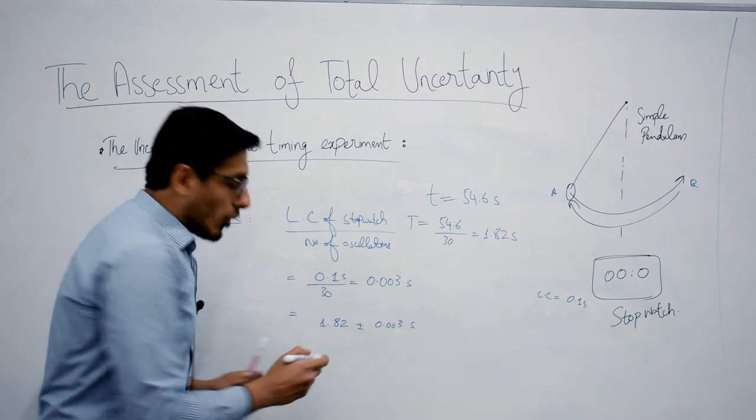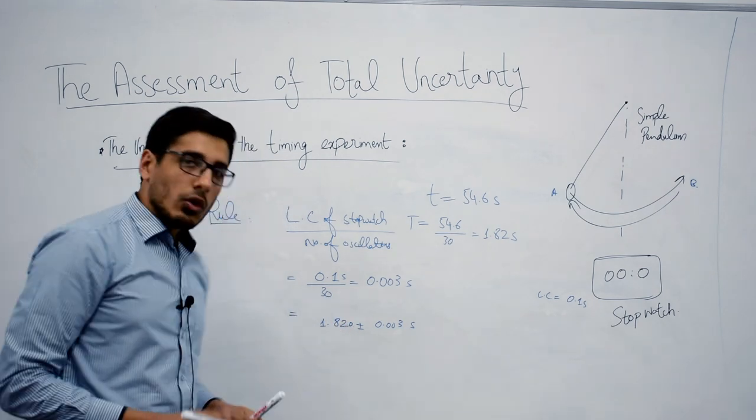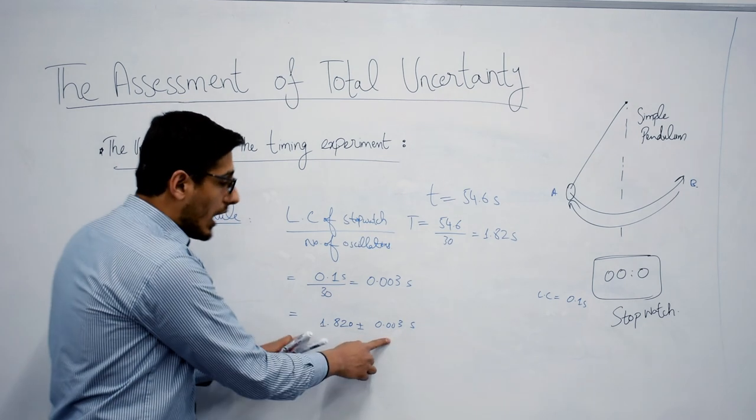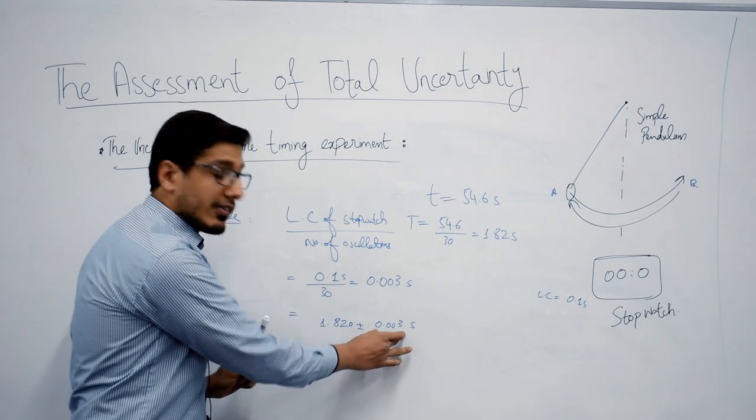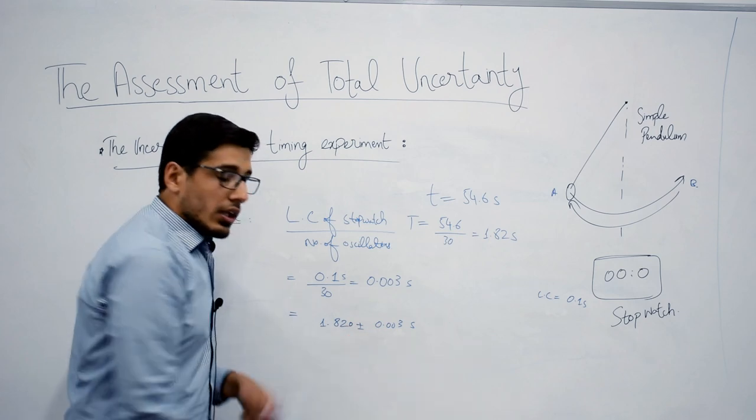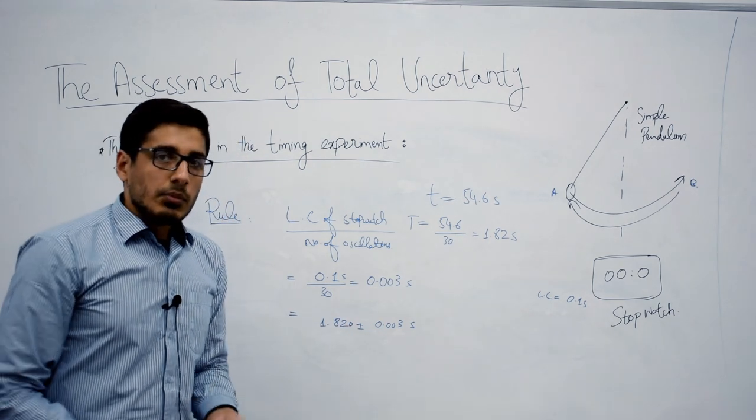So in order to remove this anomaly, you can simply write a zero here so that both are in harmony with each other, and the number of decimal places in your uncertainty are equal to the number of decimal places in your measurement.